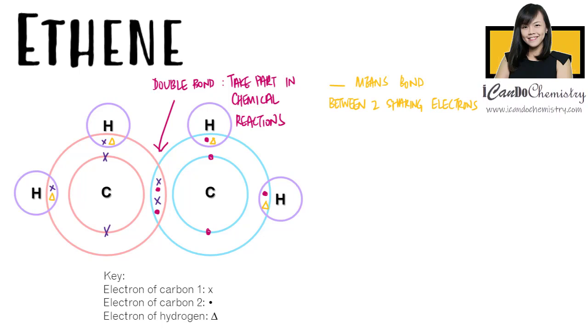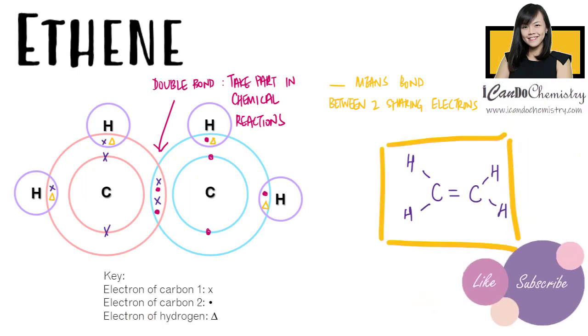Hence, one bond means the sharing of two electrons. So now we replace each of the electron pairs with a bond. Here you go, this is the structure of ethene.